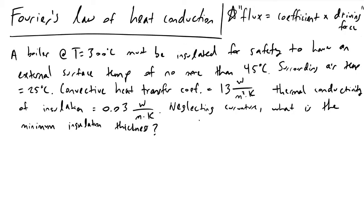If we wanted to figure out the thickness of insulation required to make a boiler room safe for people in case they were to accidentally touch the surface of the insulation, and we knew the temperature of the boiler, the way we could do that is by making use of Fourier's law of heat conduction. In this video I'm going to introduce this law and work through an example problem applying it to a real-world situation where you need to know how much insulation to buy to make a boiler room safe for your colleagues.